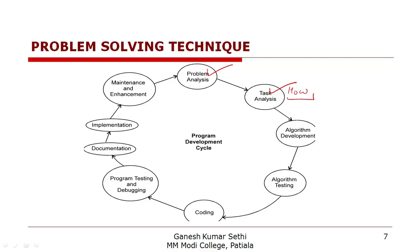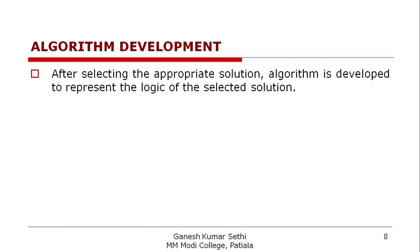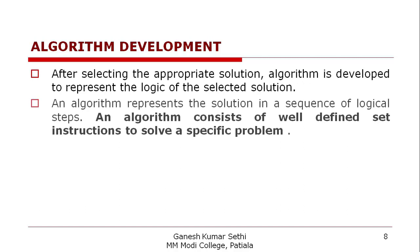If we bring that solution into a written format, that is called algorithm development. In algorithm development, we write the steps, and these steps are generally free from any programming language — they are in simple English. These steps in written format are known as an algorithm. An algorithm consists of a well-defined set of instructions to solve a specific problem.